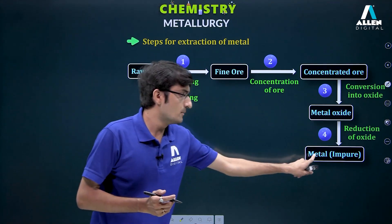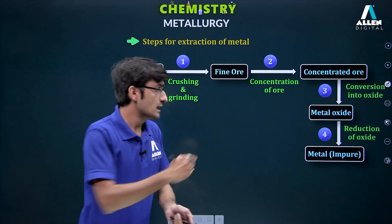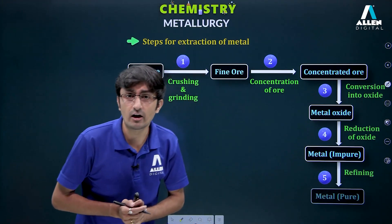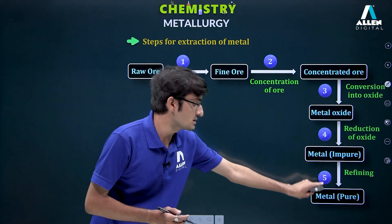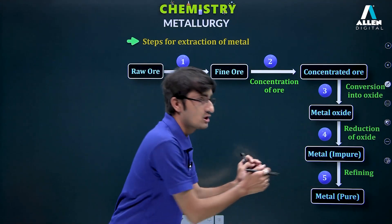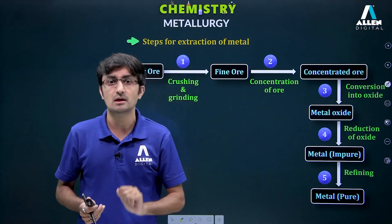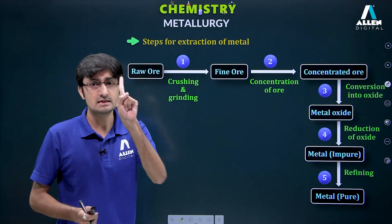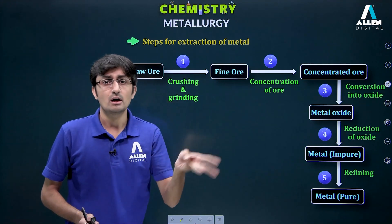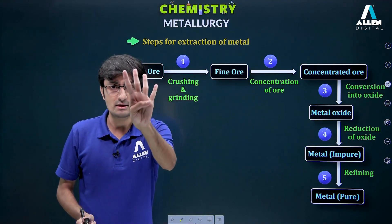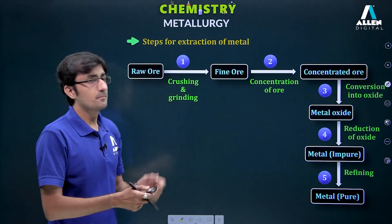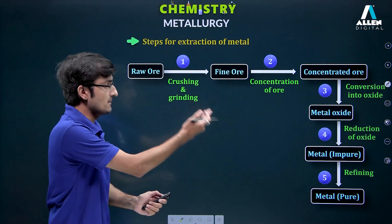Naturally, the metal obtained is not 100% pure, so the next step is refining. So from raw ore to pure metal, there are five basic steps: first, crushing and grinding; second, concentration of ore; third, conversion into oxide; fourth, conversion of metal oxide into metal; and fifth, refining.